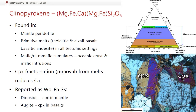You find clinopyroxene in all sorts of primitive melts — tholeiitic basalts, alkali basalts, basaltic andesites — in pretty much any tectonic setting. It's also common in mafic and ultramafic cumulates. Clinopyroxene is quite high in calcium, so when it crystallizes and is removed from a melt, it reduces the calcium concentration in the melt.